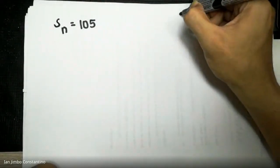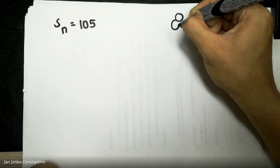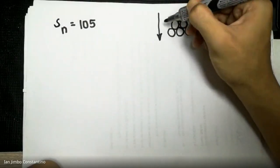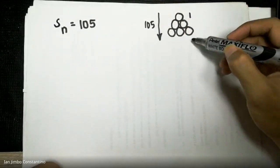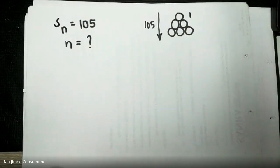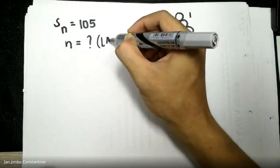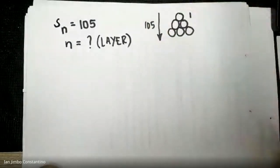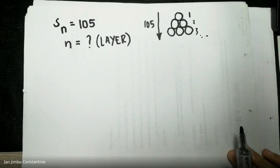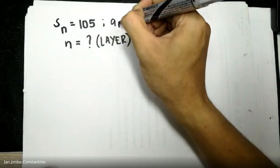Each layer contains one more log than the layer above, like a pyramid — the first layer has 1, the second has 2, the third has 3, and so on until the total reaches 105. We do not know the number of terms N. The first term a1 = 1 is given. What is being asked is the number of layers.